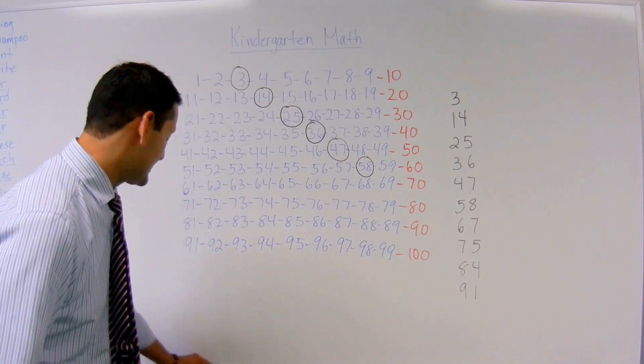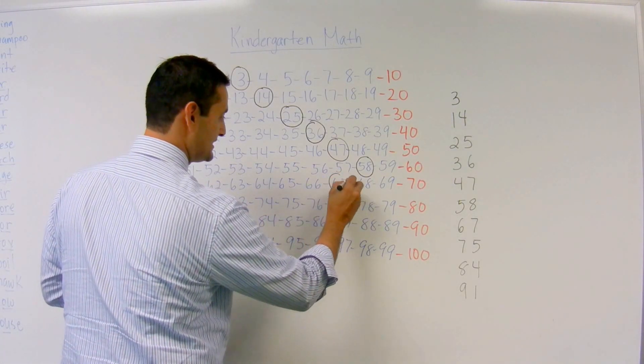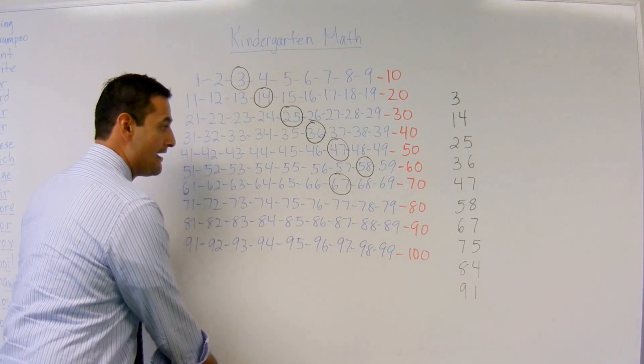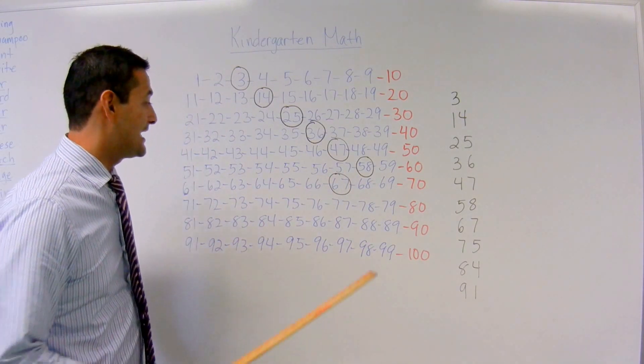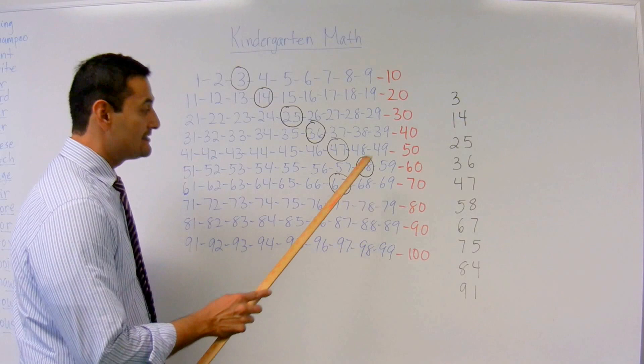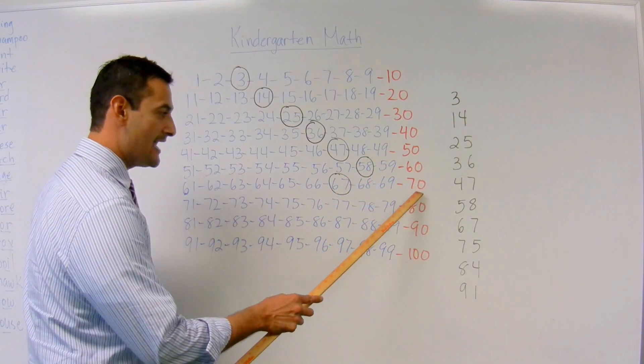Now our next number is going to be 67. So let me circle 67. Let's go ahead and let's count up. 67, 68, 69, 70.